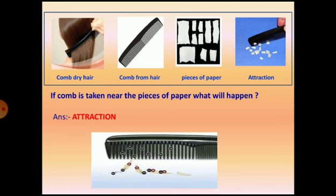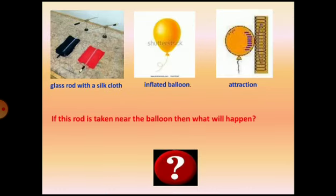Another activity: you may have performed this — rubbing a glass rod with a silica cloth. In another image there is an inflated balloon. When the rod is taken near the balloon, attraction takes place between the balloon and the glass rod.